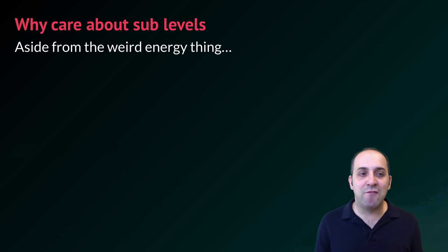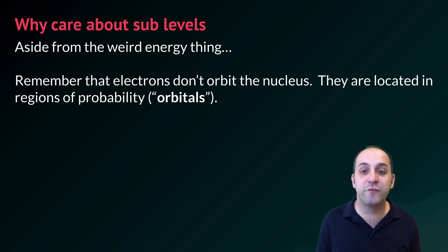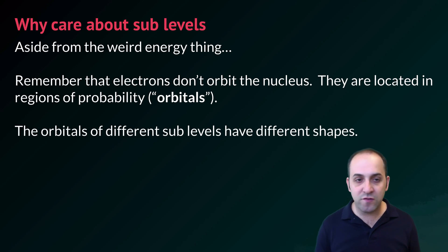Another question that you might have is why do we care about sublevels? Well, aside from the weird energy thing, you should remember that electrons don't orbit the nucleus. They're located in regions of probability, which are called orbitals. And the different orbitals of different sublevels have different shapes, different three-dimensional shapes. I'm going to show you some of the orbitals now so you can kind of see what they look like. You don't need to have this information committed to memory, even at the level of introductory college chemistry. This would really be advanced chemistry, but I think they look cool, so I figured I'd show them to you.